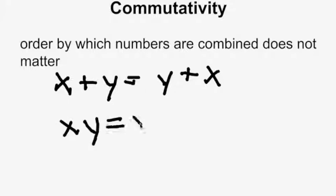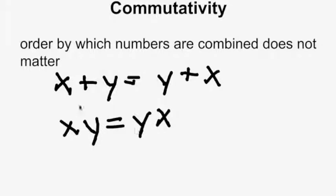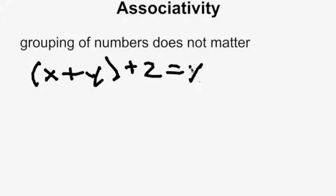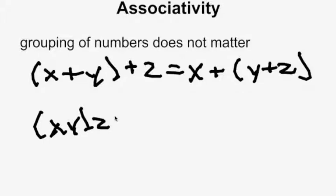The next property is associativity. Associativity states that the grouping of the numbers does not matter. This applies when there are three or more elements in your equation. So if you have x plus y plus z, where the parentheses are does not matter. Similarly for multiplication, x times y times z - where the parentheses are does not affect the outcome of the equation.